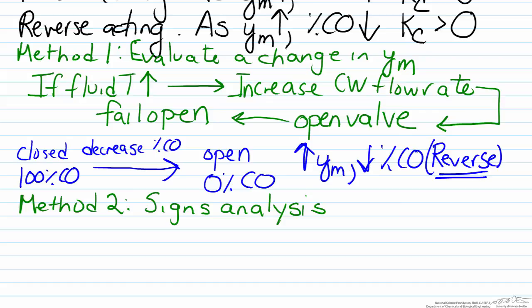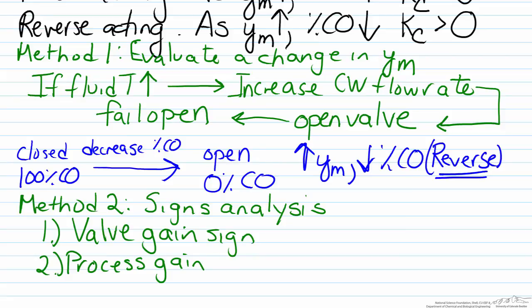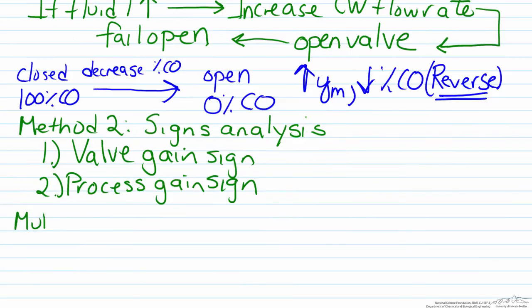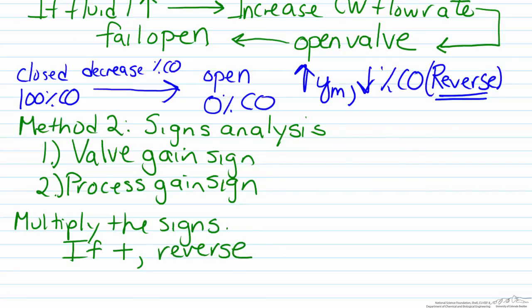We are interested in the sign of two things. The first is the sign of the valve gain, and the second is the sign of the process gain. What we do in this method is we multiply the signs of the valve gain and the process gain. If this multiplication leads to a positive, then the controller will be reverse acting. Similarly if the signs multiplied together are negative, we would select a direct acting controller.